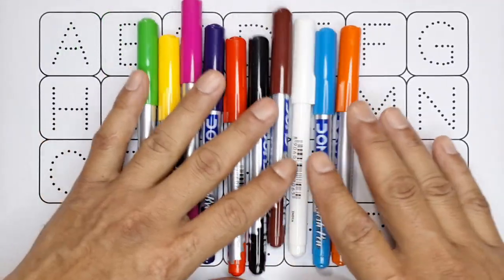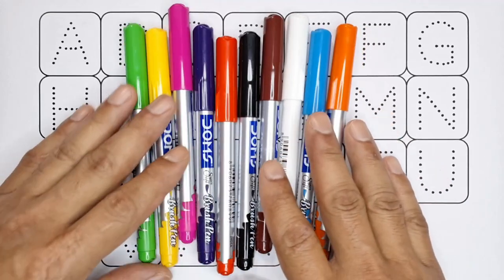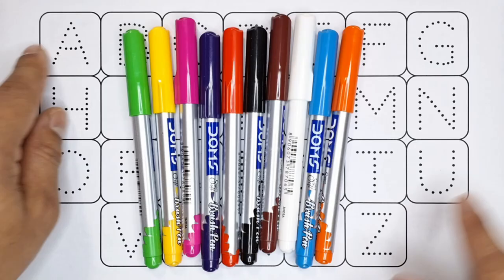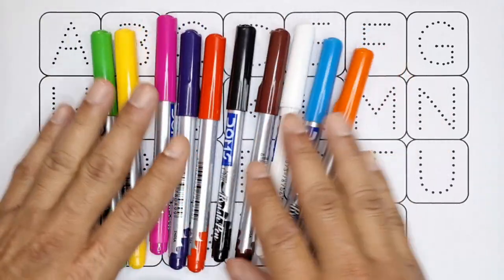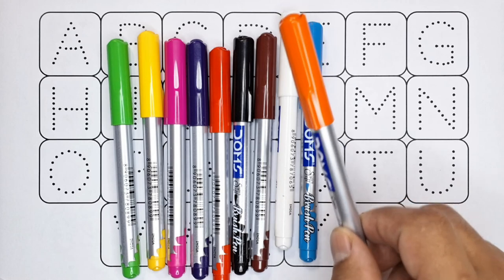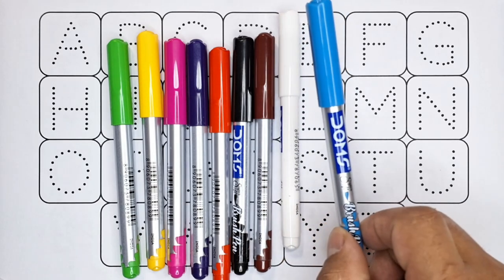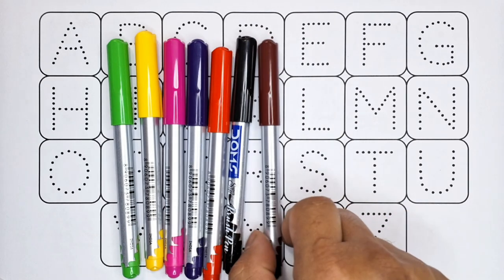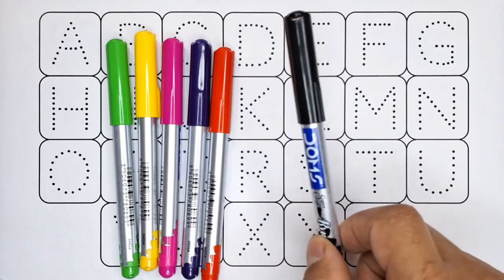Hello kids, welcome to my new video. Today we are going to learn the English alphabet letters from A to Z. These are our colors. Let's learn the names of colors: orange, blue, white, brown, black, red, purple, pink, yellow, and green.